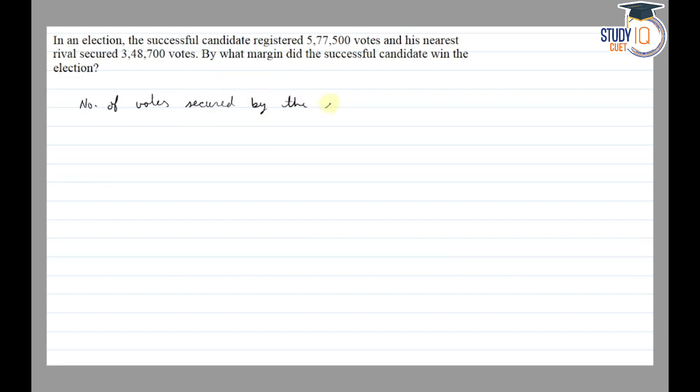by the successful candidate, we have given 5,77,500. Next we have given number of votes secured by the rival, 3,48,700.